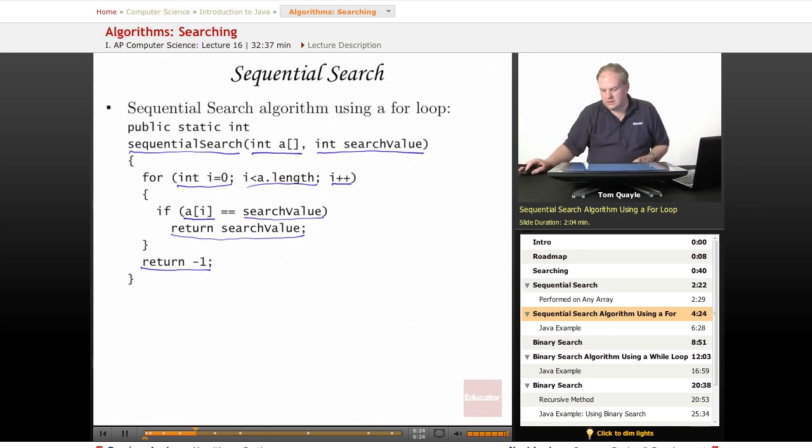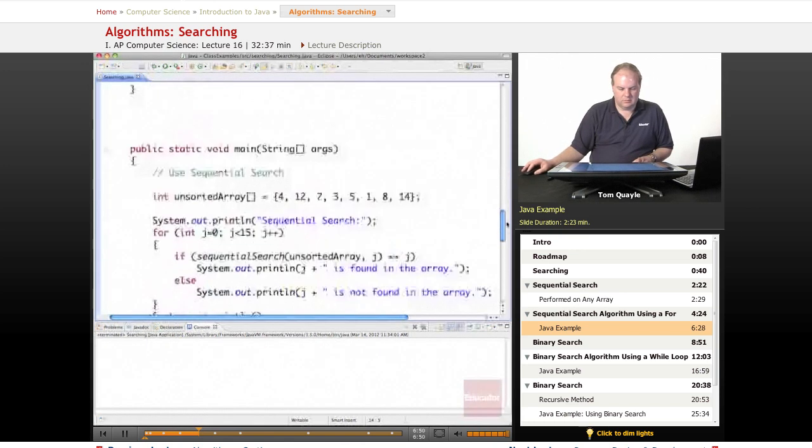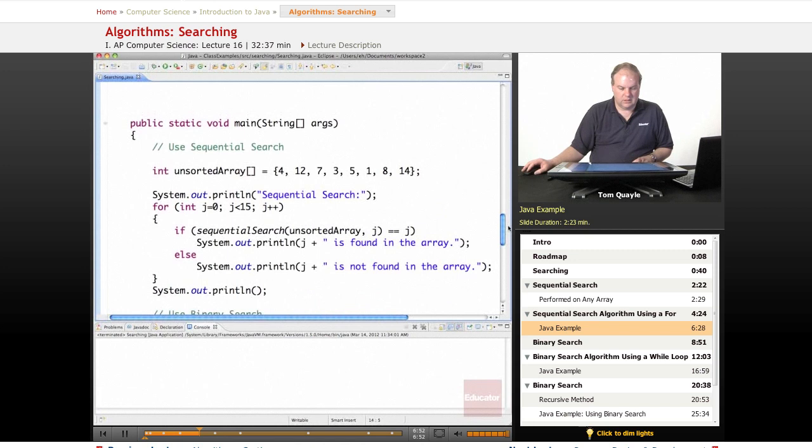So, let's take a look at how we would implement this in a real Java program. Here is the same sequential search logic using a for loop from zero to less than the length of the array. And it's exactly the code that we saw in the previous slide. If I find the search value in position i, I return it. If I get to the end of the loop and I haven't found it yet, then I'm going to return -1.